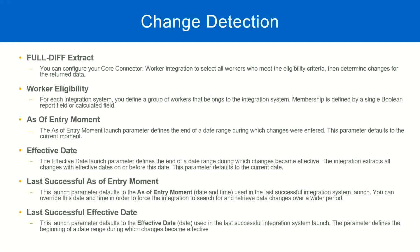These are some parameters that we will see in our integration. First is the full div extract — you can configure the Workday Code Connector to select all workers who meet the eligibility criteria and then determine changes for the returned data. This is done to improve performance. Then it works with another field called worker eligibility criteria.